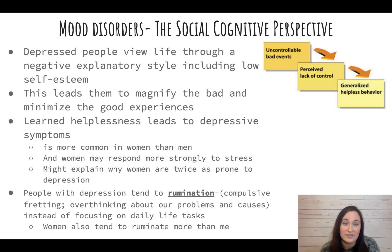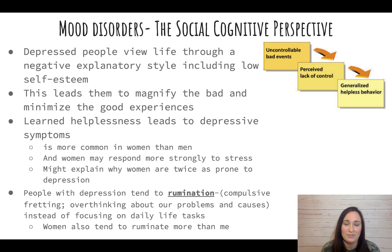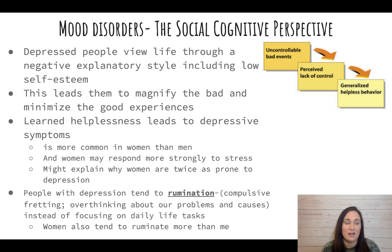From the social cognitive perspective, we're looking at the environment, the situations, and the personality. Depressed people view life through a negative explanatory style — they're going to magnify bad situations and minimize the good. Something bad happens, and a person with a negative explanatory style can develop feelings of learned helplessness, where an uncontrollable bad event leads to a perceived lack of control. The more a depressed person feels a lack of control, the less they'll try to change anything, and that just pushes the cycle of depression further.